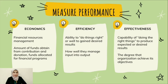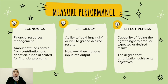I will explain the five criteria for non-profit organizations to measure performance, which are: economics, efficiency, effectiveness, esprit de corps, and ethics. The three main criteria that should be focused on are economics, effectiveness, and efficiency.